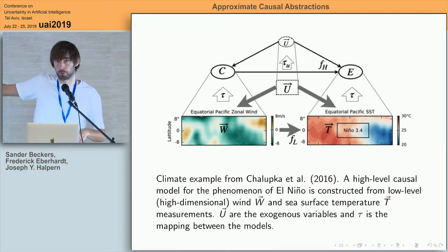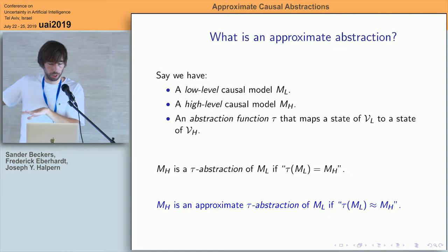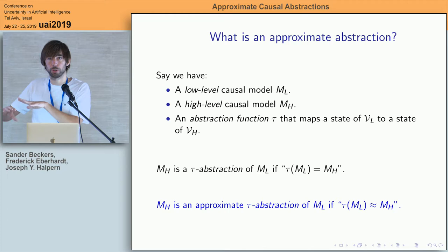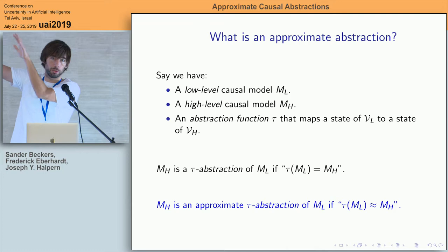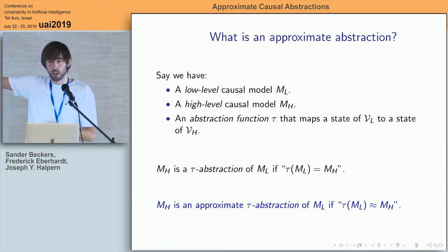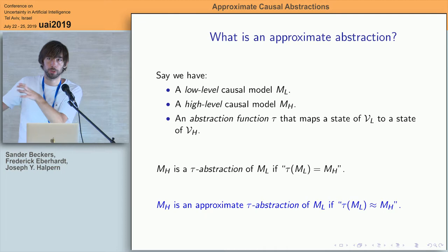Let me make precise what elements are needed for such an abstraction. We need a low-level causal model ML, a high-level causal model MH, and a function tau that maps the state space of the low-level model onto the values of variables at the high level — it says nothing about causal dynamics, just how the state spaces relate. Given that tau is provided, the idea of an abstraction is how to extend this mapping so that we apply it not just to the state space but to the entire causal model, including all the dynamics and the possibility of interventions. That was the challenge.